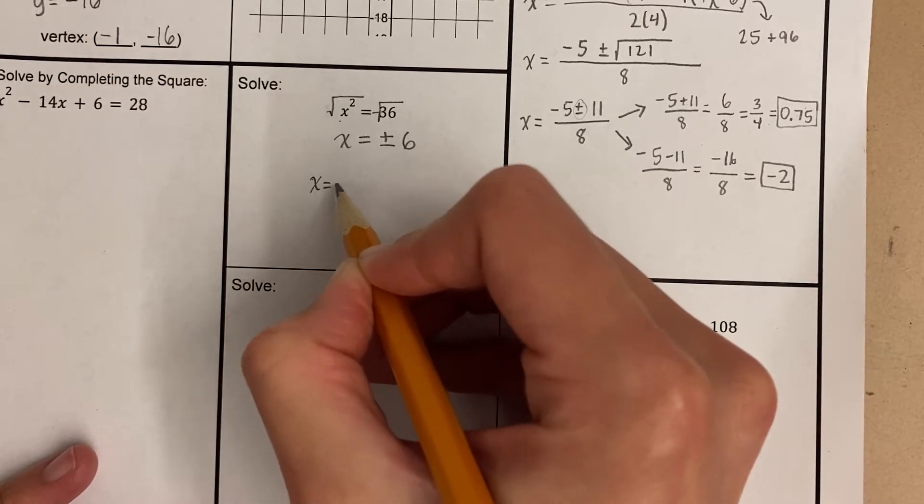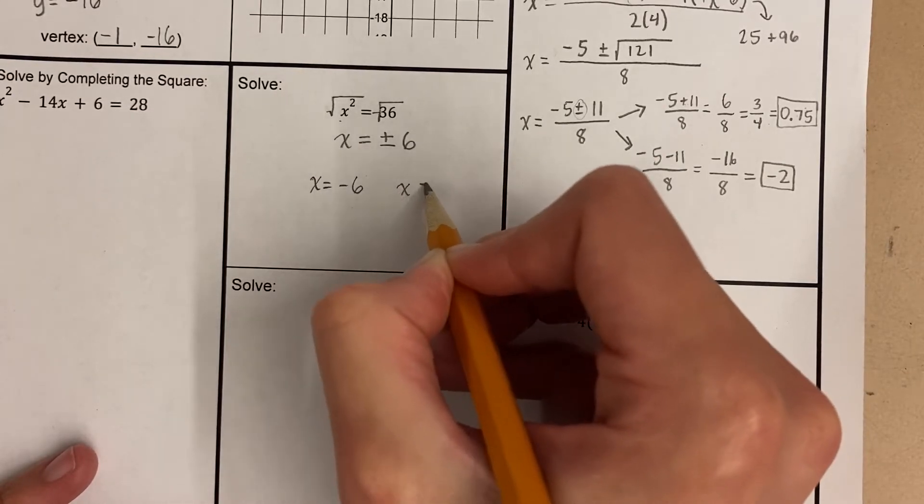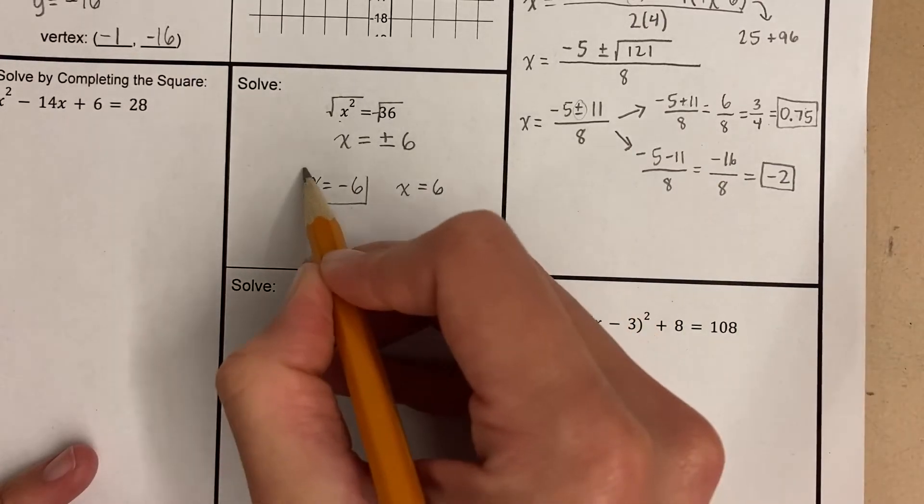So then you write like this, x equals negative 6, or x could equal positive 6. Okay, and those are your two answers.